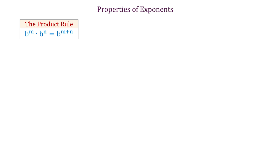For example, x to the second power times x to the fourth power equals x to the power of 2 plus 4, and this makes x to the sixth power.